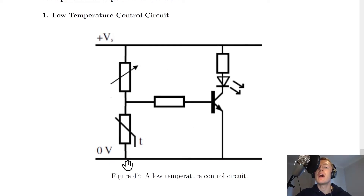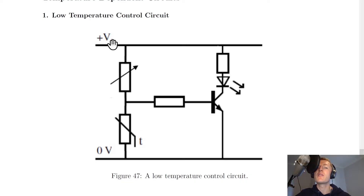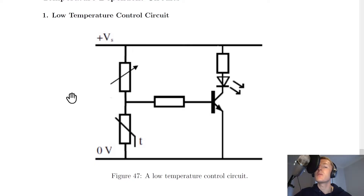You'll see here we have our input on the left, our potential divider circuit, our processing part in the middle with our transistor and a resistor, and then our output up here, which is our LED with a series resistor. The main thing I want to point out is that for the low temperature control circuit, we have the thermistor at the bottom. We've got a thermistor as the lower component, and then we've got a variable resistor as the upper component.